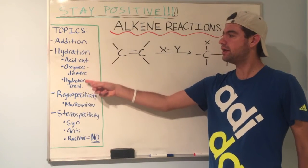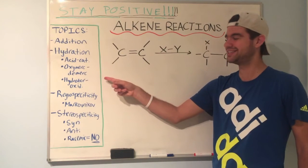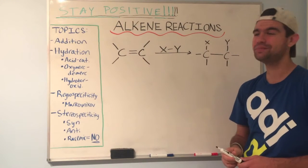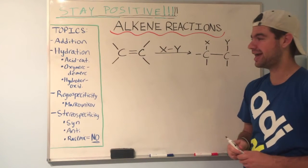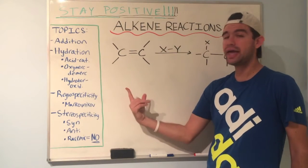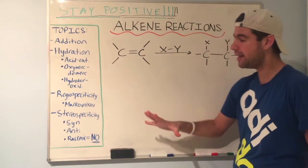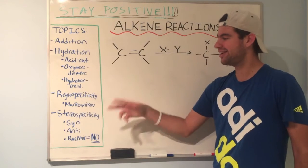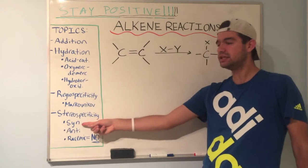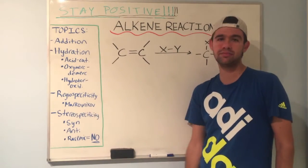We're going to talk about three types of hydration reactions: acid-catalyzed hydration, oxymercuration-demercuration, and hydroboration-oxidation. That's a mouthful, but with enough practice, you're going to get it. Here's the game plan — for each of these three, we're going to talk about: A, if it's regiospecific or not, whether it follows Markovnikov's rule; and B, is it stereospecific — do the X and Y add syn to each other, anti to each other, or is there no stereospecificity?